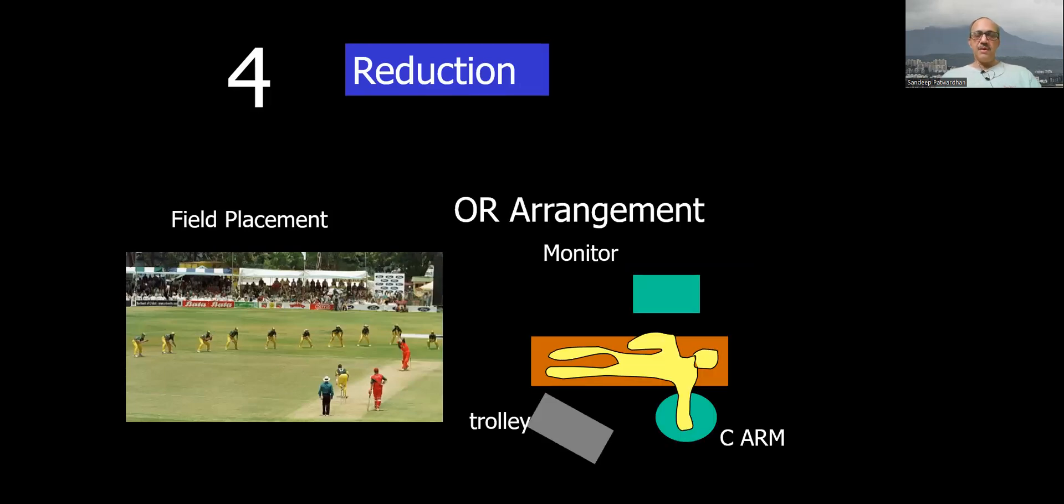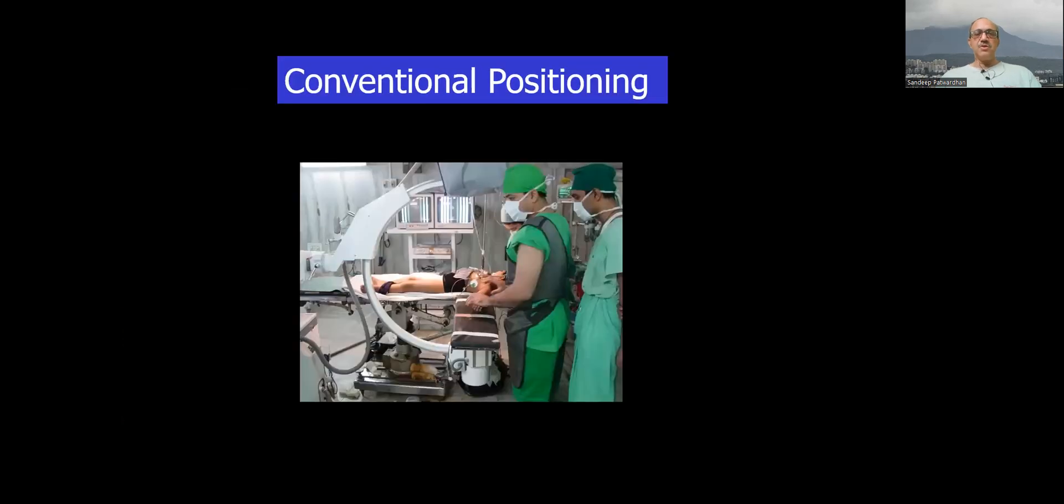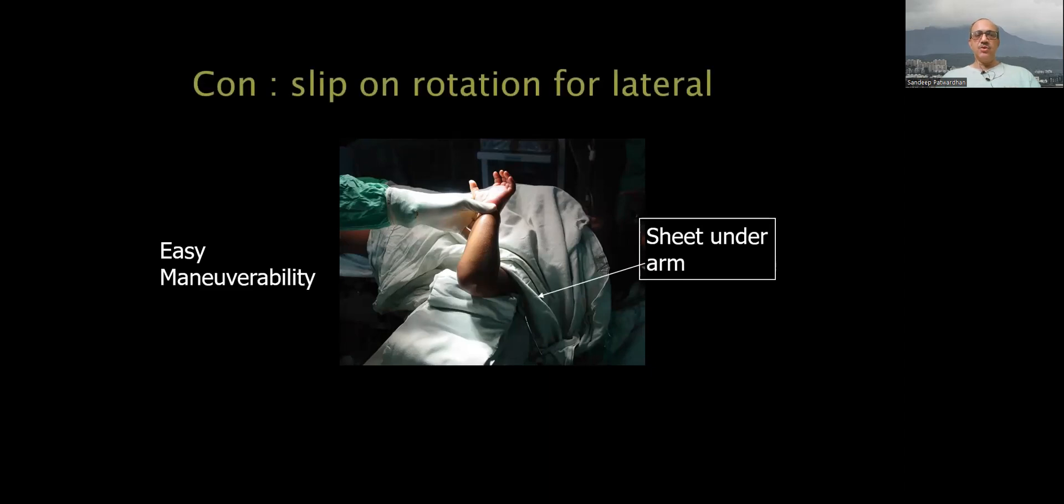Reduction - everybody has his own method. Make sure that your OT arrangement is good. Conventional positioning on a large hand table with a small folded sheet below the elbow will allow you ease of reduction and pinning. That is how you should do it.